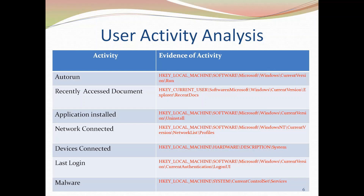A malicious insider can create an autorun program with malicious code that runs automatically and causes damage. For recently accessed documents, if a malicious insider accessed documents such as .doc or PDF files, that information is available in the RecentDocs key within HKEY_CURRENT_USER. From that key, the forensic investigator can get details about which documents were recently accessed.